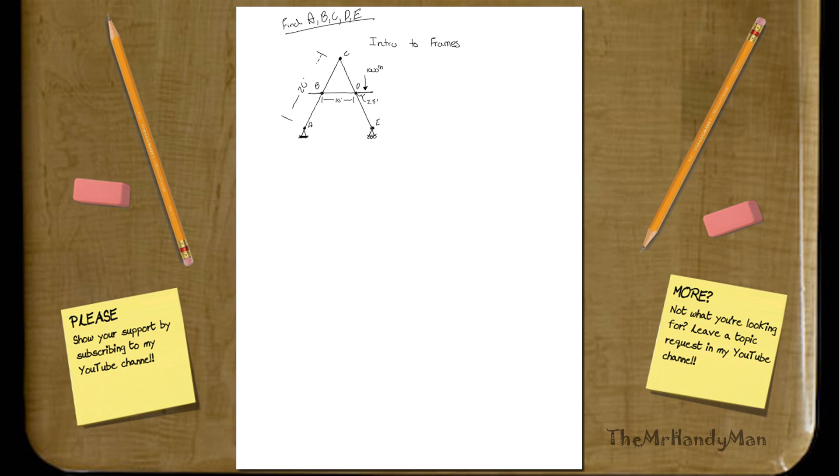This is the introduction to frames. This is exactly the same as truss design, except for the fact we don't only have two forced members. You will have members that have three joints on them, or four, or five, or however many the design merits.